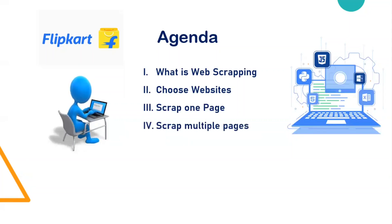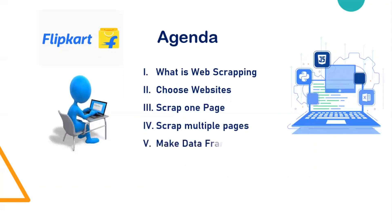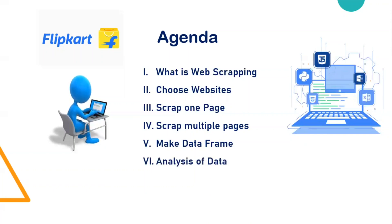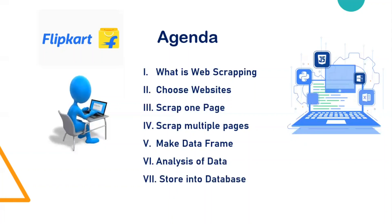We'll apply a for loop to scrape multiple pages at the same time. After collecting all the information, we'll make a complete data frame and check if there are any unwanted or missing columns. We'll analyze and clean the data, then store it into a database.